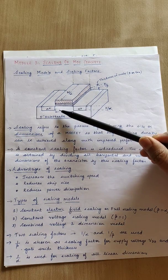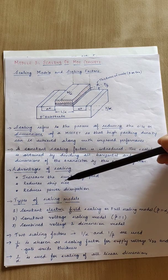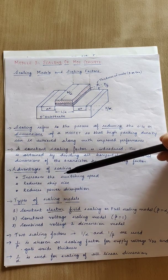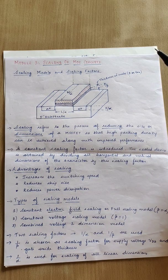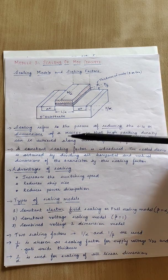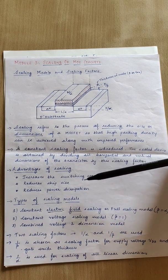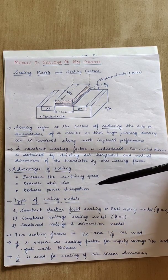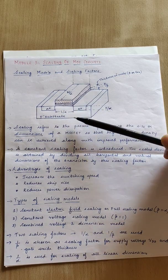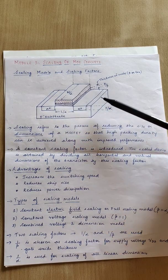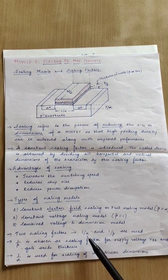When we reduce the size of the transistor, the size of the chip can also be reduced. So the second advantage of scaling is it reduces chip size. Smaller transistors also often dissipate less power, so the third advantage of scaling is reduced power dissipation. These are the three main advantages of scaling a MOSFET.